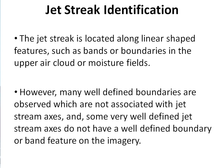Now let's talk about jet streak identification. The jet streak is located along linear-shaped features such as bands or boundaries in the upper air cloud or moisture fields. However, many well-defined boundaries are not associated with jet stream axes, and some well-defined jet stream axes do not have a well-defined boundary or band feature in the imagery. One learns to identify jet streaks by looking frequently at the imagery and becoming skilled as one gains experience.